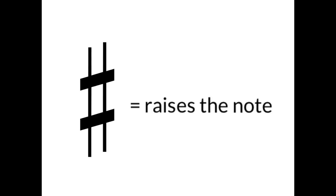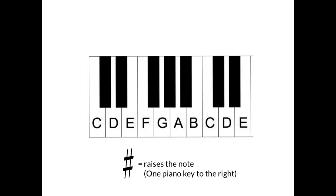The other symbol you'll see often is called a sharp symbol. This is the opposite of a flat — where a flat lowers the note, a sharp raises the note by a half step, or one key up on the piano. So looking at our piano, a flat made it go one note to the left; now a sharp is going to make it go to the right. So if we have A right here and we want to make it A sharp, we'd go one key up to the right, and this note would be A sharp.